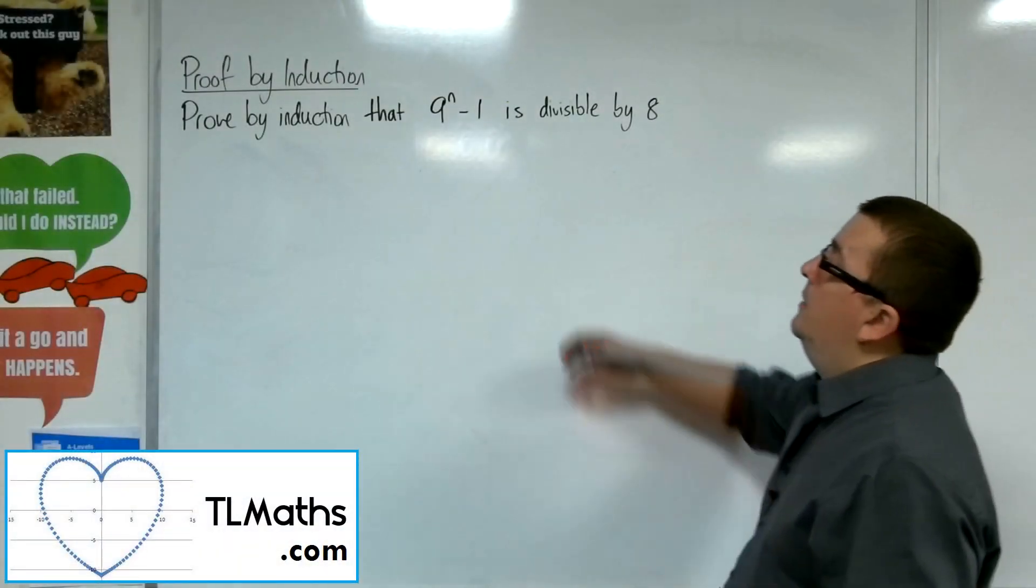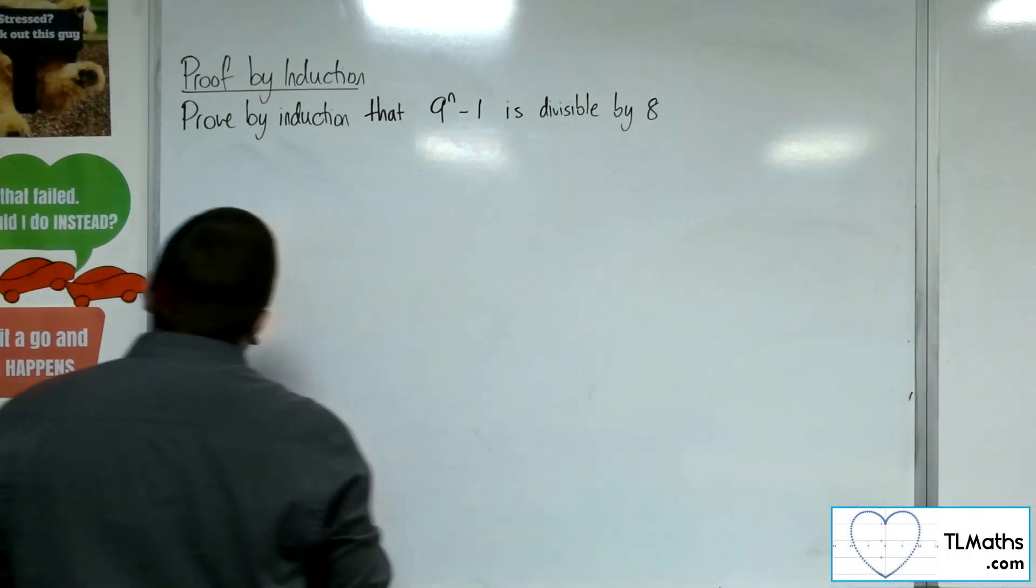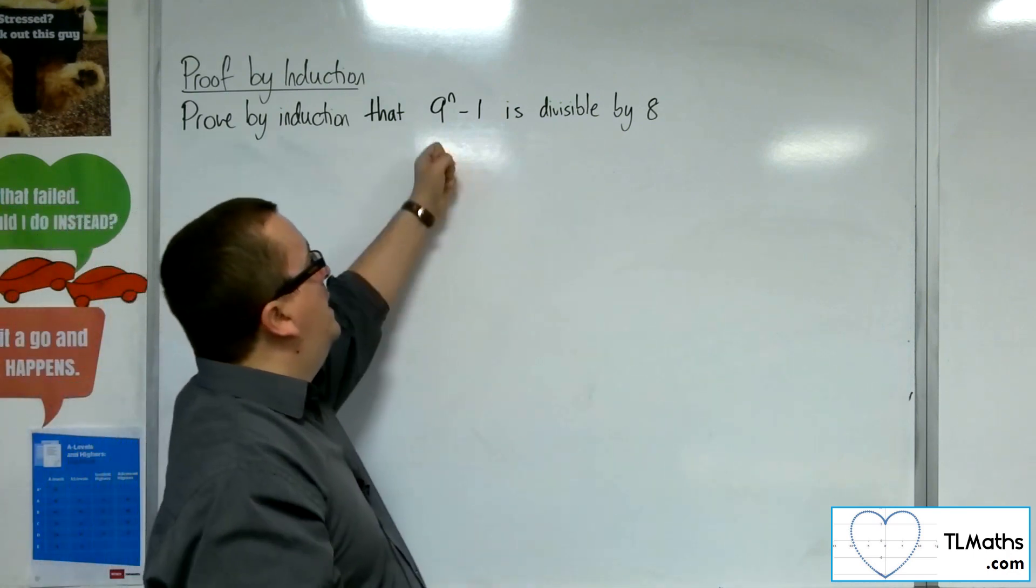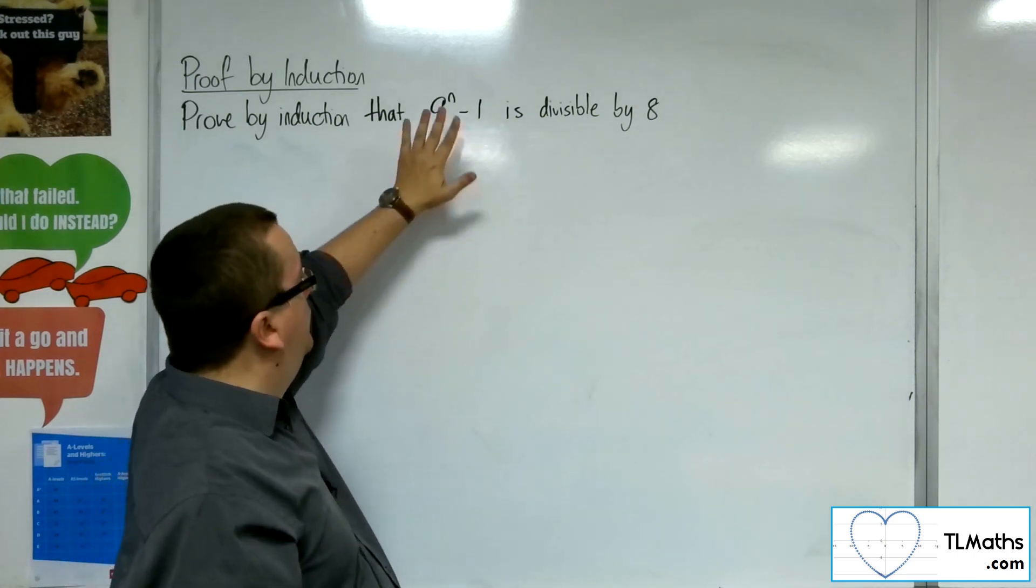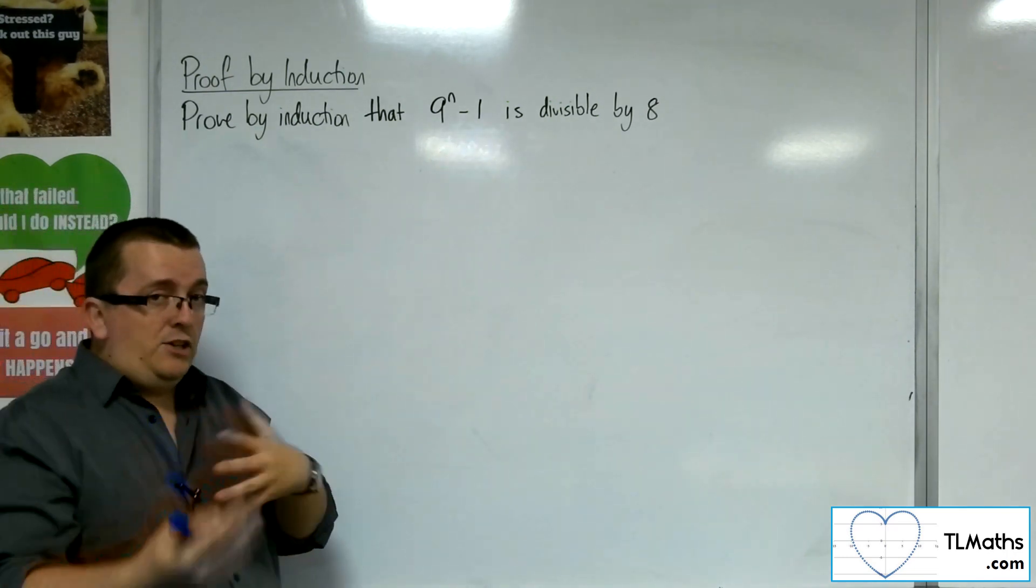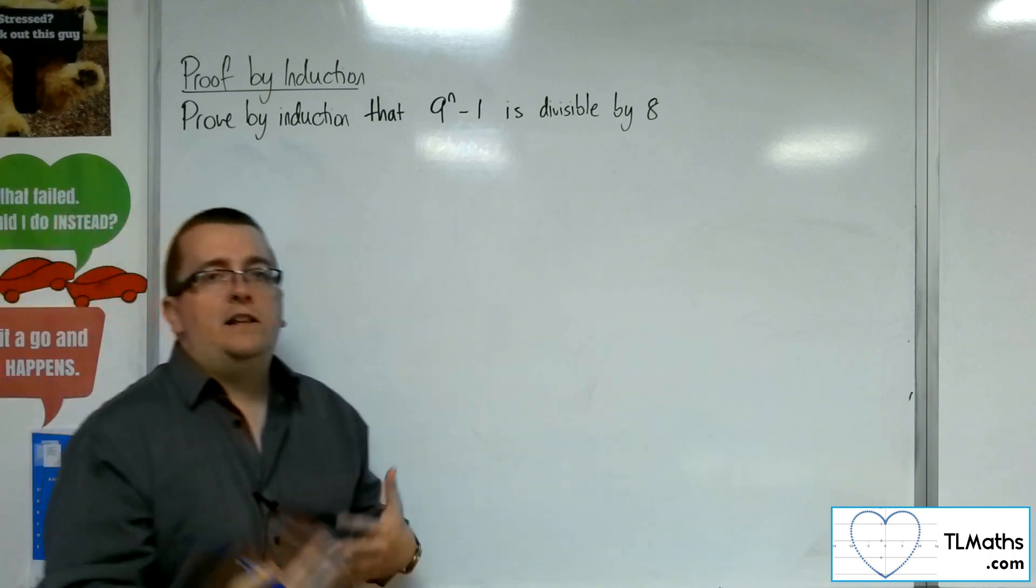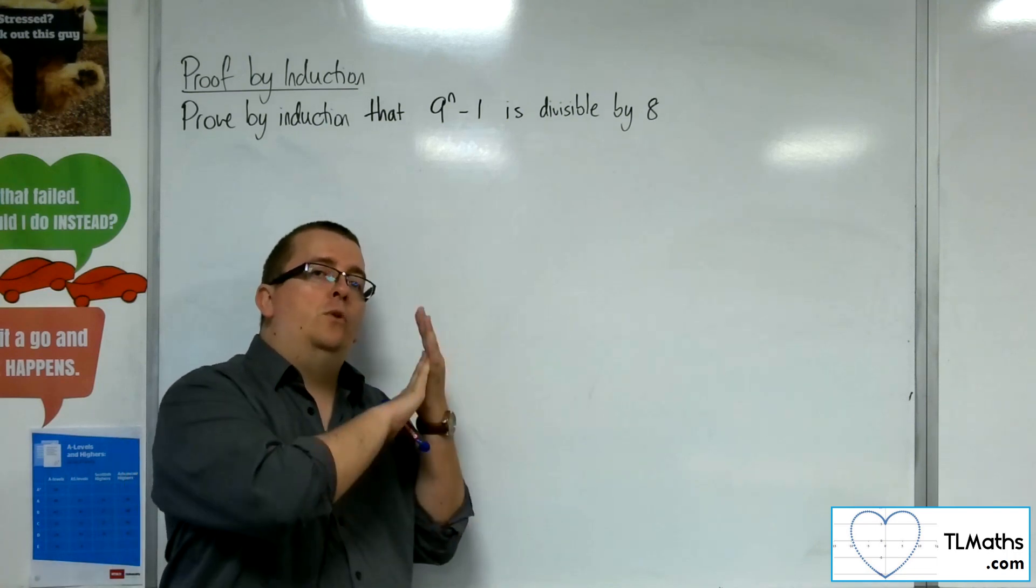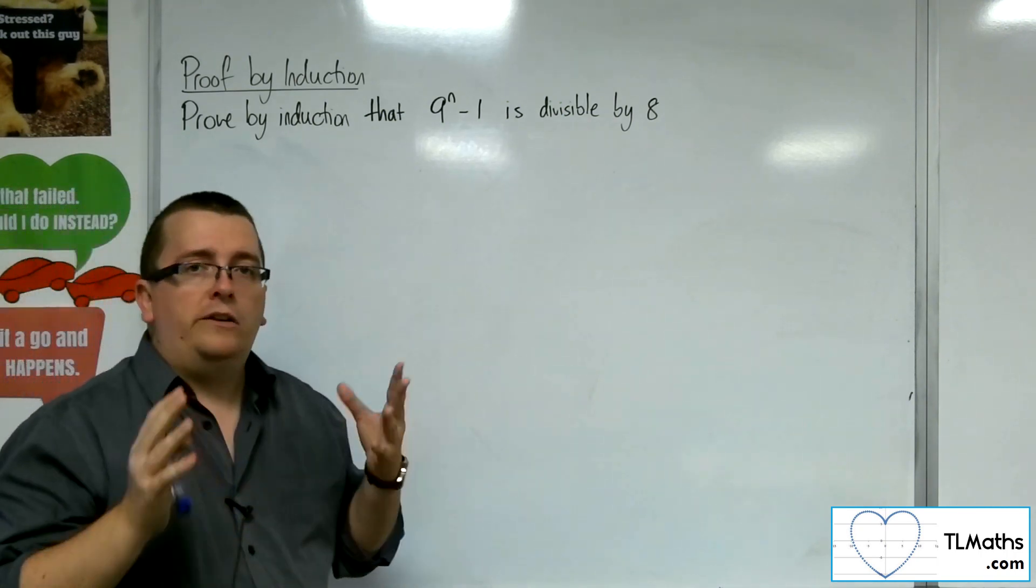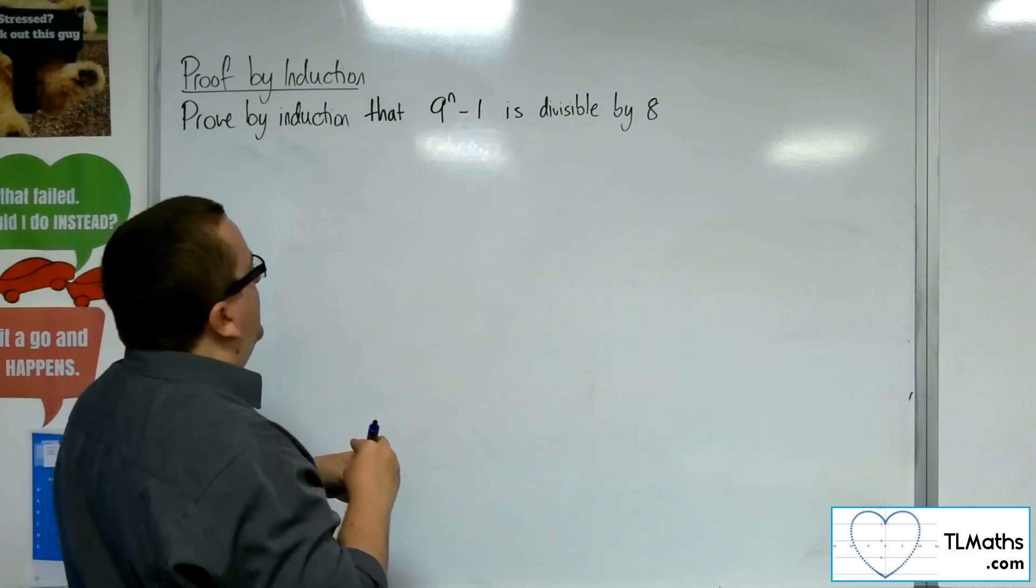In this video we're going to prove by induction that 9 to the n minus 1 is divisible by 8. A lot of these divisibility proof by induction questions often incorporate the index here, so this looks similar to the previous problem. This one is fairly straightforward, so hopefully you can get to grips with it early on. It is subtly different to the problem we looked at just now when we introduced the divisibility style of question. You can see that there are subtly different forms to have to contend with.